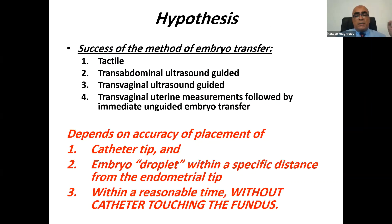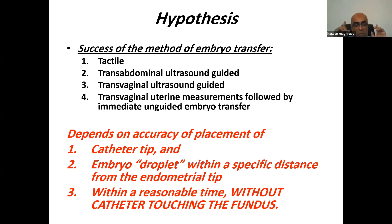The success of the method of embryo transfer — whether tactile, transabdominal, transvaginal, or transvaginal with predetermined measures — depends on where the catheter tip will be, where the embryo droplet will be placed, and whether this will occur within a reasonable time without the catheter touching the fundus. This is why success or failure can happen.